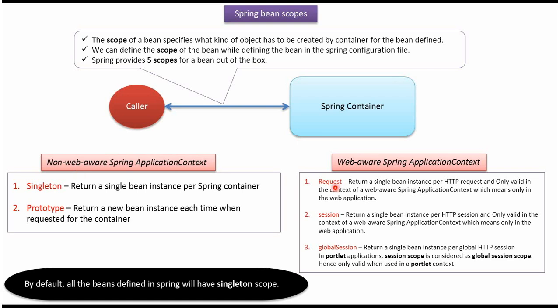Request scope returns a single bean instance per HTTP request. Request scope is only valid in the context of a web-aware Spring application context, which means it is only valid in a web application.